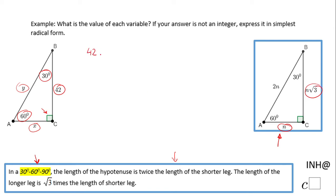I'm going to solve for n, so that means divide by √3. I have n = 42/√3, which is not a bad answer. However, we're going to rationalize.